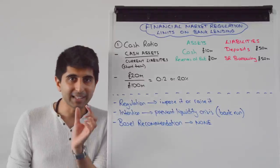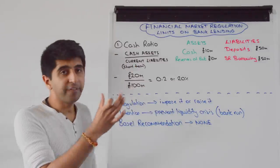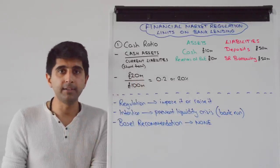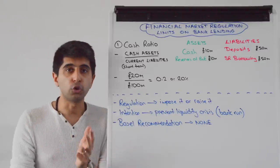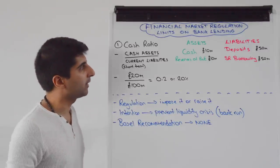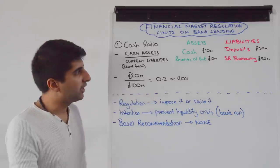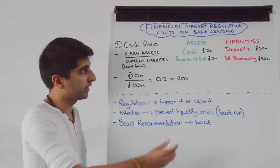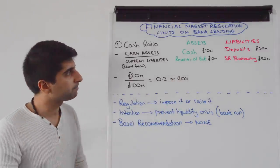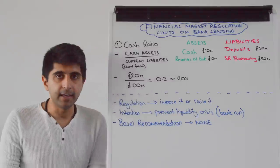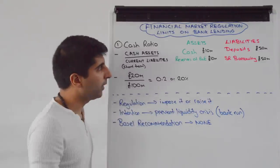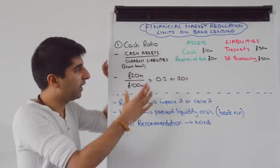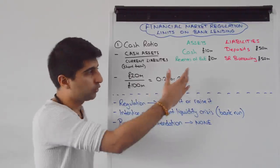Let's get started by looking at the cash ratio. Here is the equation: we divide cash assets as part of the balance sheet by current liabilities. Remember, current liabilities are short-term liabilities — your deposits, your short-term borrowing on the balance sheet of a commercial bank. I have written a little mock balance sheet here, isolating the two parts considered in this equation: cash assets themselves and reserves of the Bank of England. Dividing cash assets of £20 million by current liabilities of £100 million gives us a cash ratio of 0.2 or 20%.